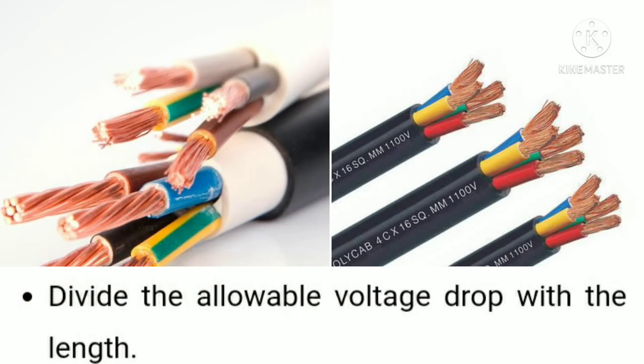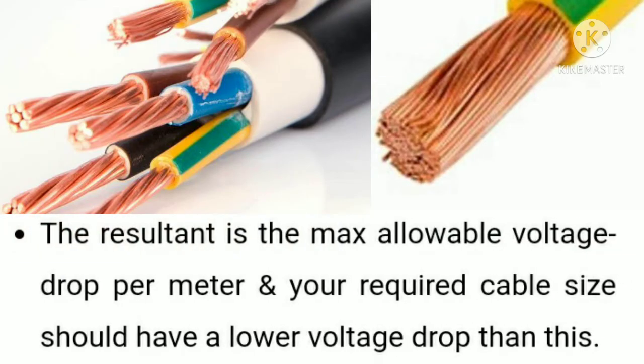The next step is to divide the allowable voltage drop by the length of the cable. It is important that the voltage drop of the cable stays within the permissible limit. Dividing the voltage drop by the cable length is essential for choosing the correct wire or cable.